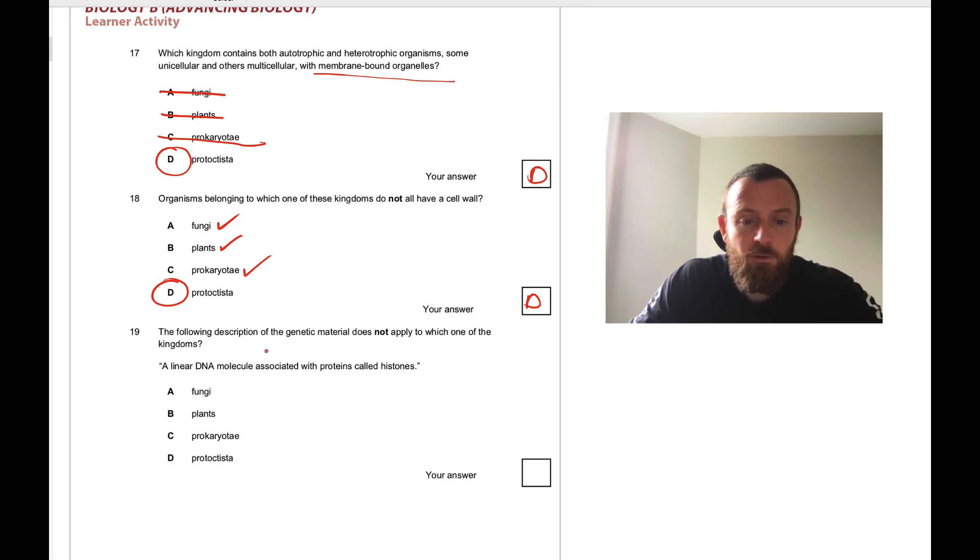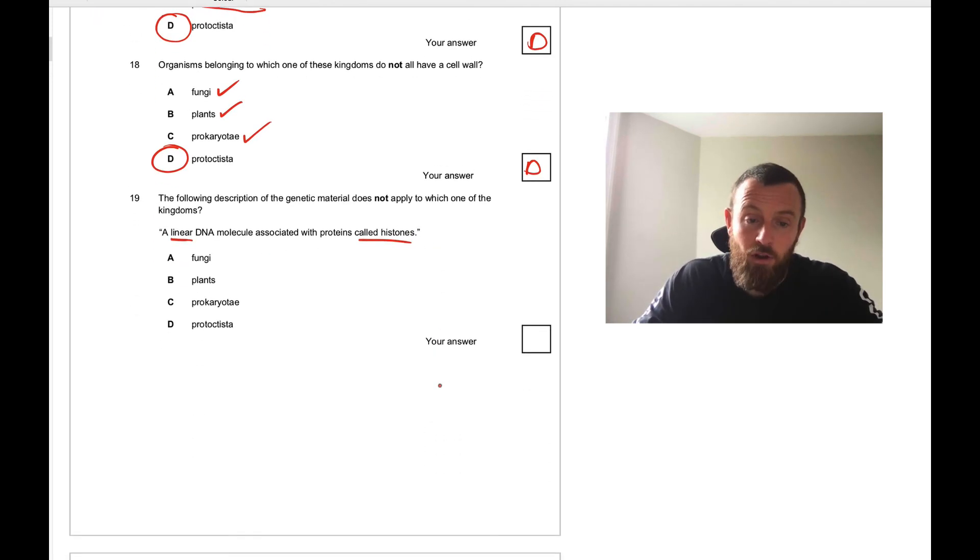The following description of the genetic material does not apply to which one of the kingdoms: Linear DNA molecule with histones. We're talking about eukaryotes here. Fungi are eukaryotes, plants are eukaryotes, prokaryotes are not, Protoctista are. So therefore is C. 19C.